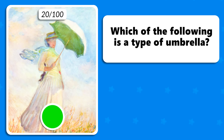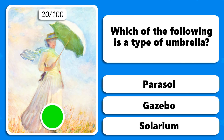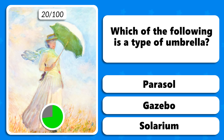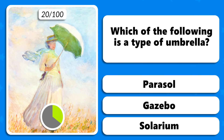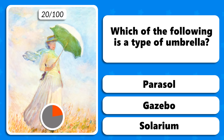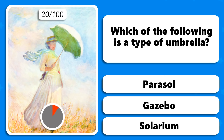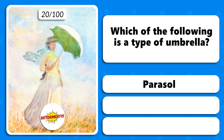Which of the following is a type of umbrella — a parasol, a gazebo or a solarium? A parasol.